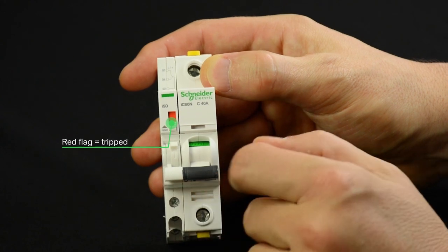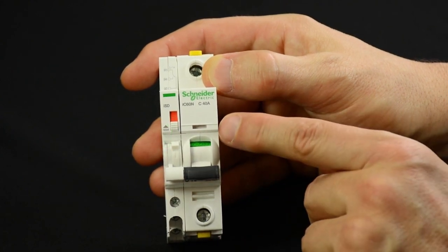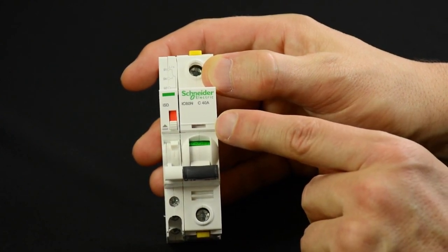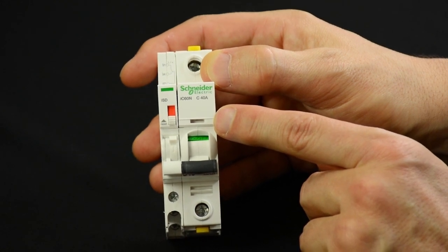In case of a real tripping, the VZ trip of the IC60 circuit breaker would also turn red.